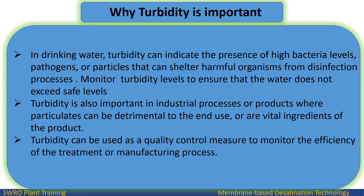Why is turbidity important? In drinking water, turbidity can indicate the presence of high bacteria levels, pathogens, or particles that can shelter harmful organisms from disinfection processes. It is important to monitor turbidity levels to ensure that water does not exceed safe levels. Turbidity is also important in industrial processes or products where particulates can be detrimental to the end use or are vital ingredients of the product. Turbidity can also be used as a quality control measure to monitor the efficiency of the treatment or manufacturing process.